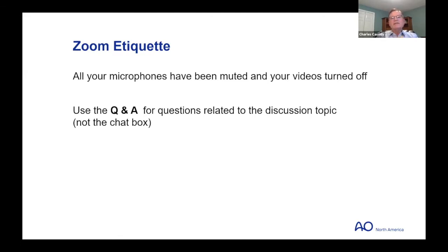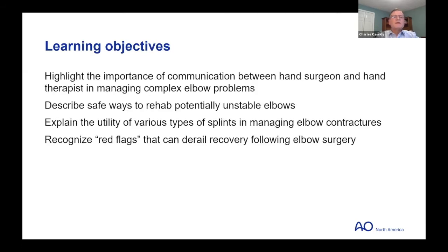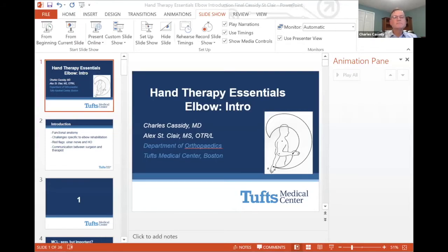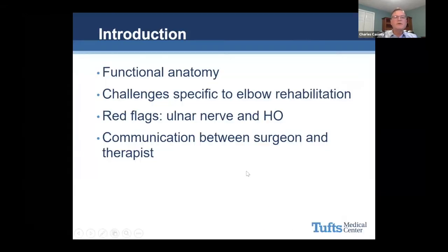Use the Q&A for questions related to topic discussions, and we'll respond by typing or bring them up during the session — not in the chat box, in the Q&A. The learning objectives are: highlight the importance of communication between the hand surgeon and the therapist in managing complex elbow problems; describe safe ways to rehab potentially unstable elbows; explain the utility of various splints in managing elbow contractures; and recognize red flags that can derail recovery following elbow surgery. We'll discuss functional anatomy, challenges specific to elbow rehab, red flags, and the importance of surgeon-therapist communication.